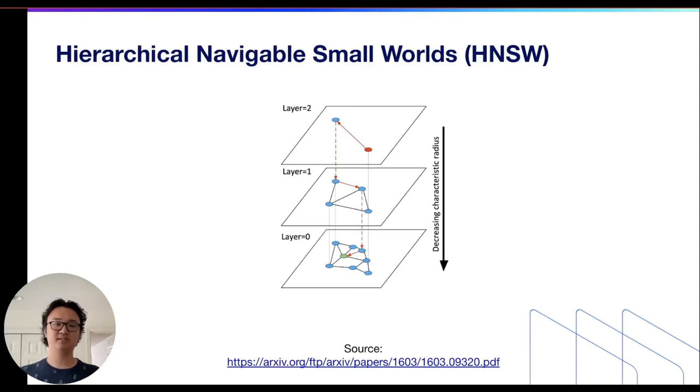At index time, this algorithm creates a layered graph index from your dataset. At query time, it queries from the top layer down until it finds the closest point to your input.